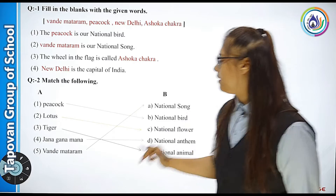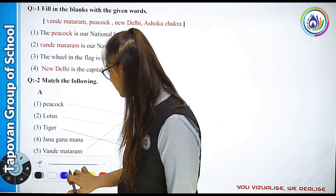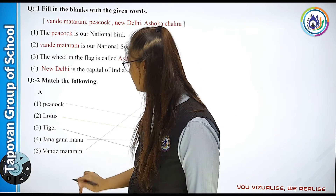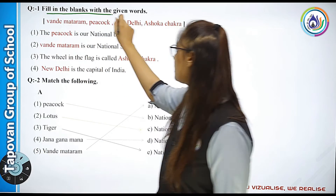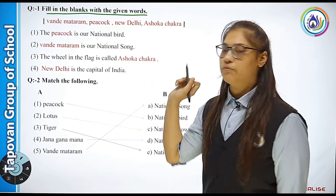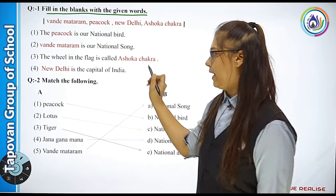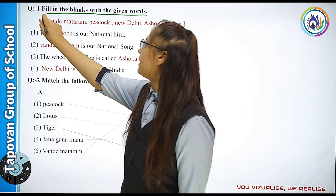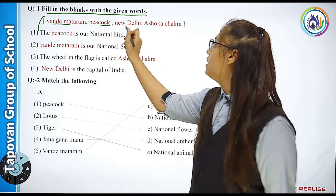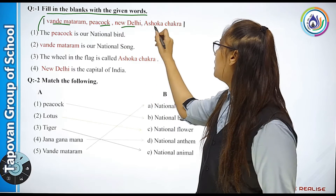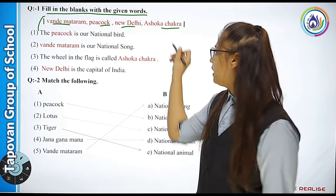First we will see: fill in the blanks with the given words. The brackets given to us are: Vande Mataram, Peacock, New Delhi, Ashoka Chakra.